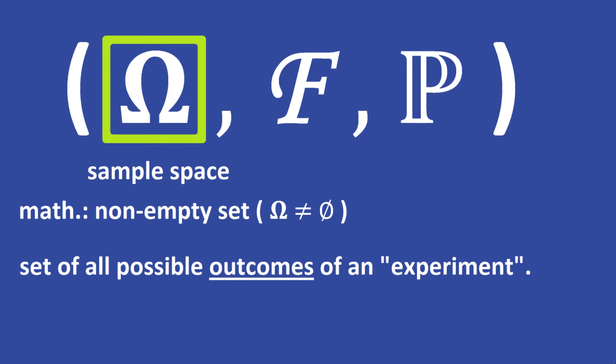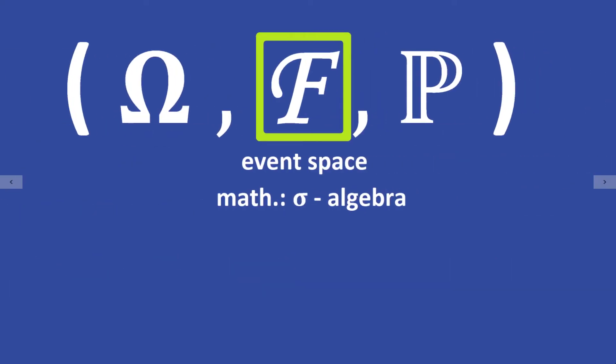The second element is the so-called event space F, which is a sigma algebra. An event is a set of outcomes in the sample space.